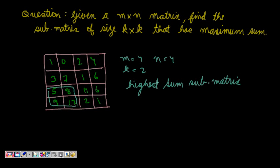We are given a matrix of size M×N with M rows and N columns. Our task is to find a submatrix of size K×K that has the maximum sum. In this example, M and N are both 4, giving a 4×4 matrix. With K equal to 2, we need to find the 2×2 submatrix whose sum of elements is maximum. The highlighted submatrix here has the maximum sum.